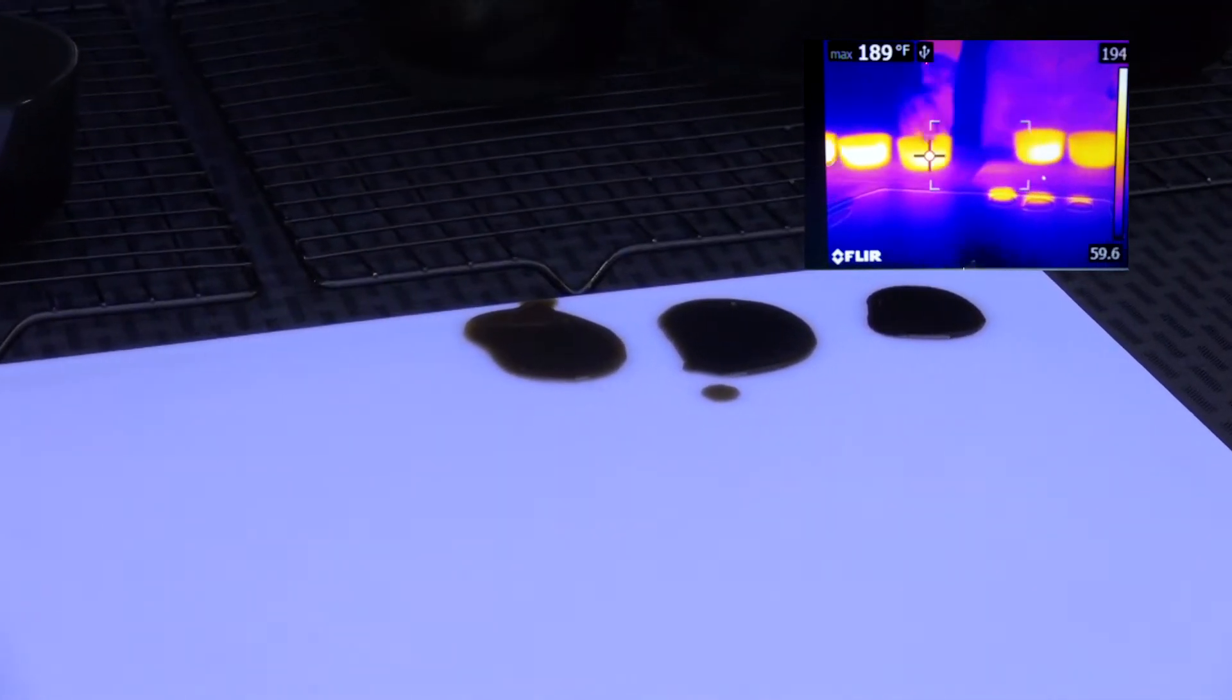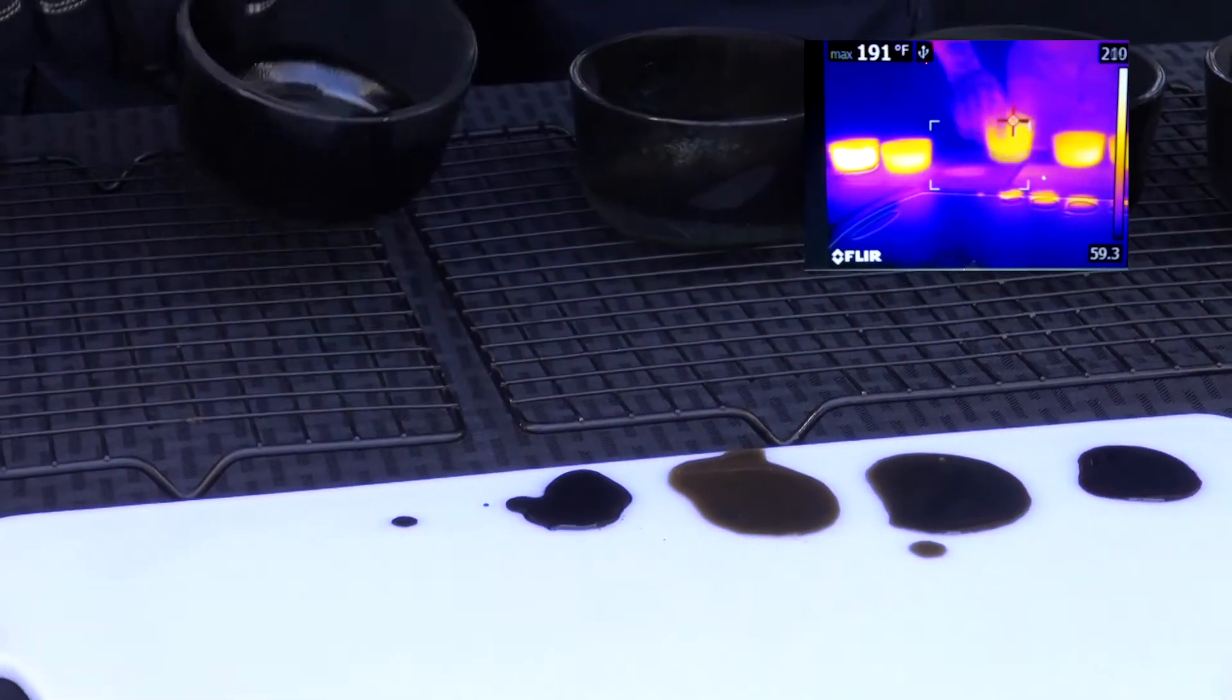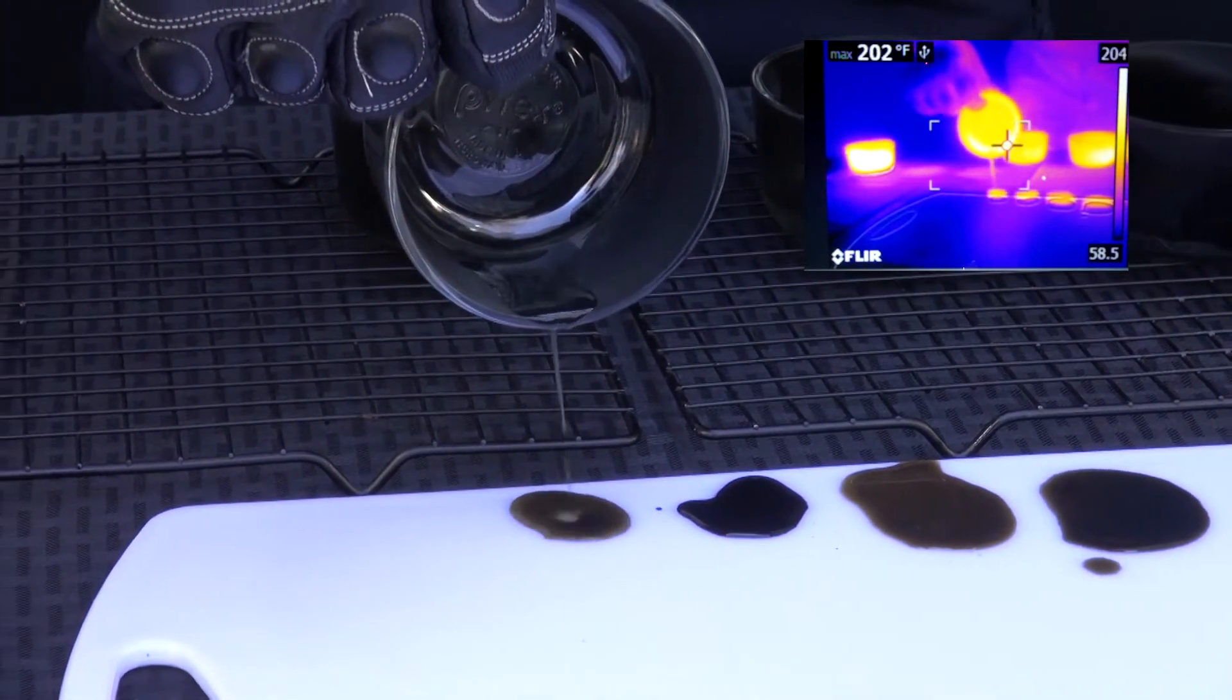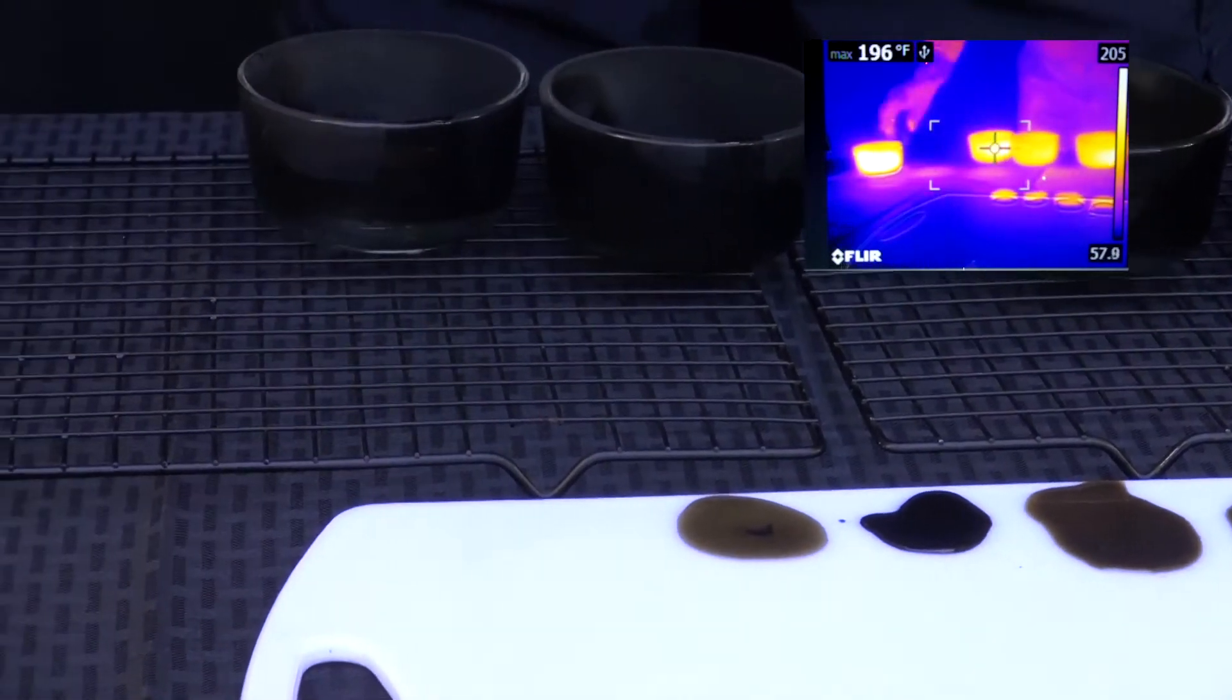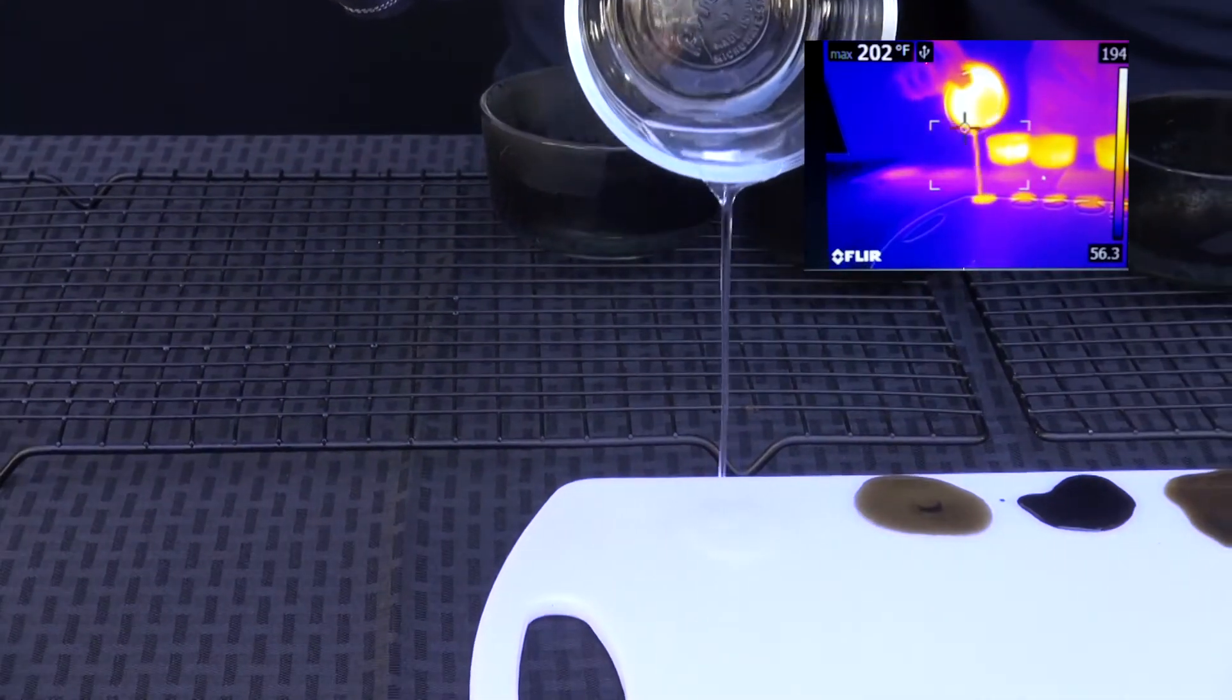Those are black. They're destroyed. And that's, once again, that's normal operating conditions. We just tried to accelerate it with a torch just to not waste your time. But as you can see, each one of these lubricants, except for this one, that's Molecular Advantage, has been destroyed.